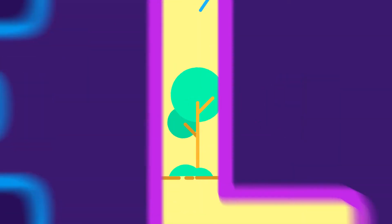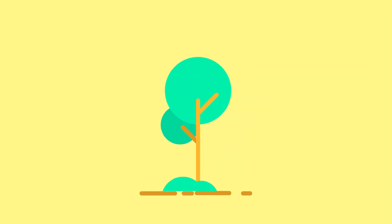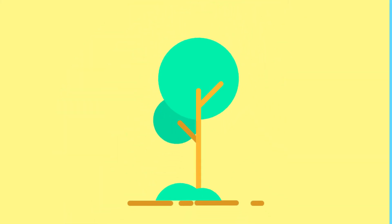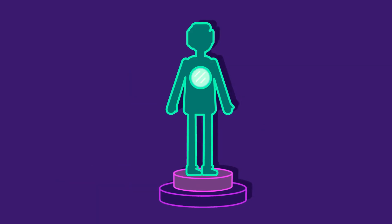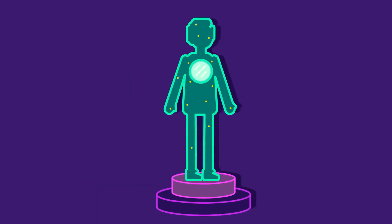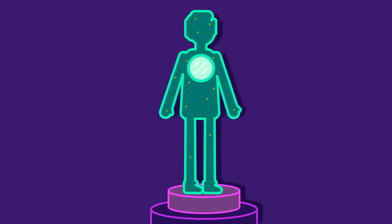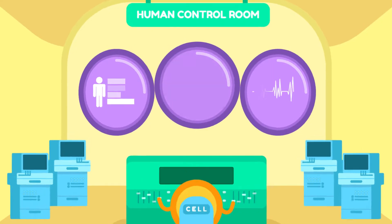Have you ever examined a leaf under the magnifying glass? You may have noticed extremely small rectangular compartments in them. Did you know these keep the plant alive? These small compartments are not just present in plants, but animals and microbes too. They are responsible for life and are called cells. Cells are the basic unit of life.